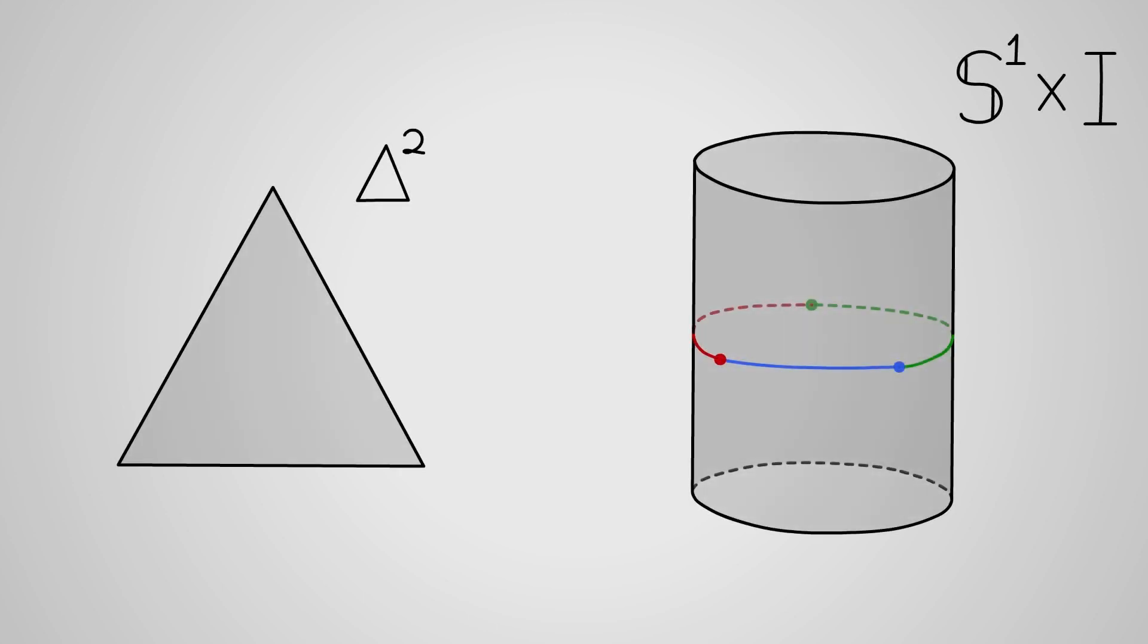So, any function from delta two to the cylinder which takes the boundary of delta two to our loop is necessarily discontinuous. If we restrict ourselves to considering continuous functions, then our loop can't be filled in. We've found a boundary with no interior.